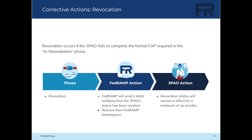If a 3PAO has deficiencies or fails to complete the formal CAP required in the in-remediation phase, they may enter revocation. A letter will be sent to the 3PAO notifying them that its FedRAMP recognition status has been revoked, why it was revoked, and that it has been removed from the FedRAMP marketplace. The 3PAO's revocation status will remain in effect for a minimum of six months, and revoked organizations are not authorized to conduct FedRAMP assessments.